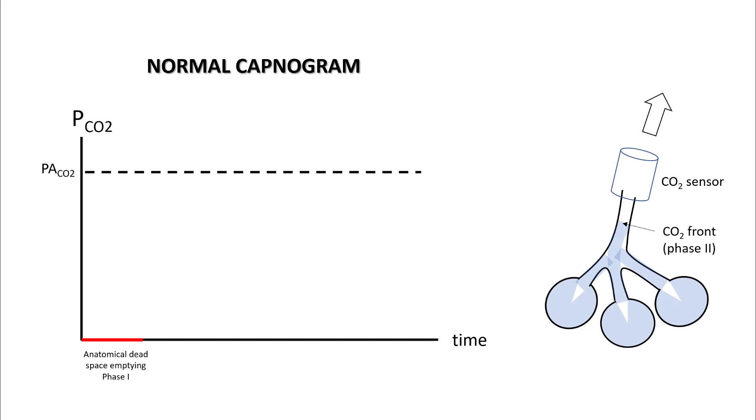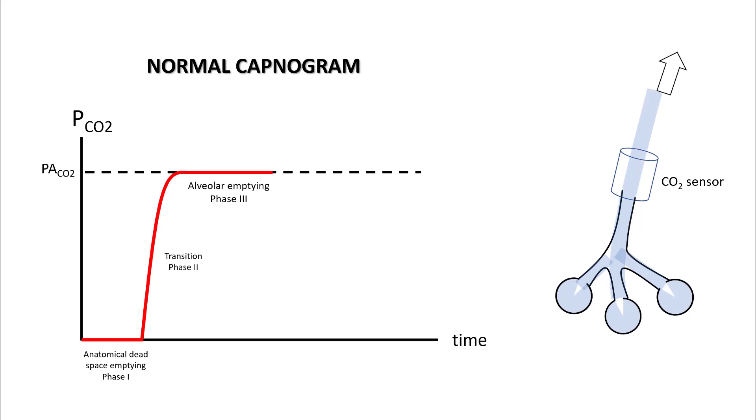Since there is no CO2 in that portion, your first part of the capnogram will be at zero. As you exhale, the CO2 sensor will pick up the alveolar CO2 and it will increase to that level. There will be a transition phase—that's called phase two.